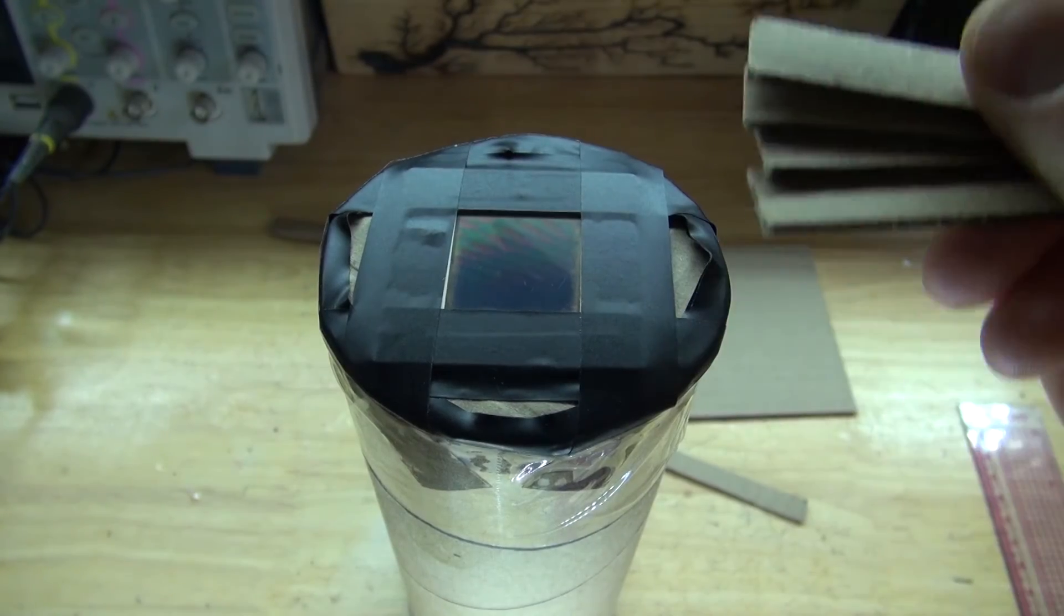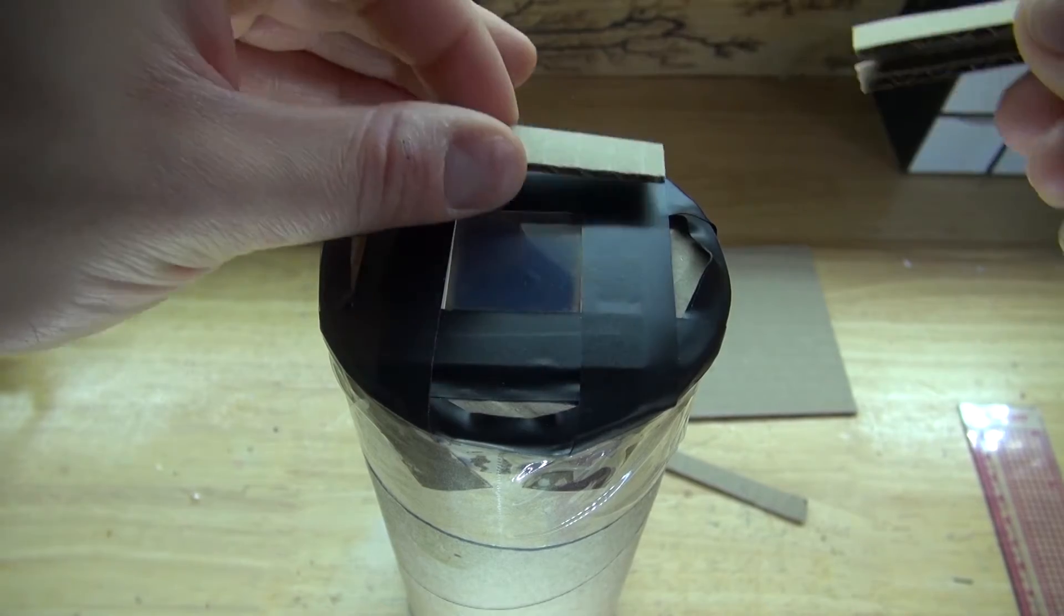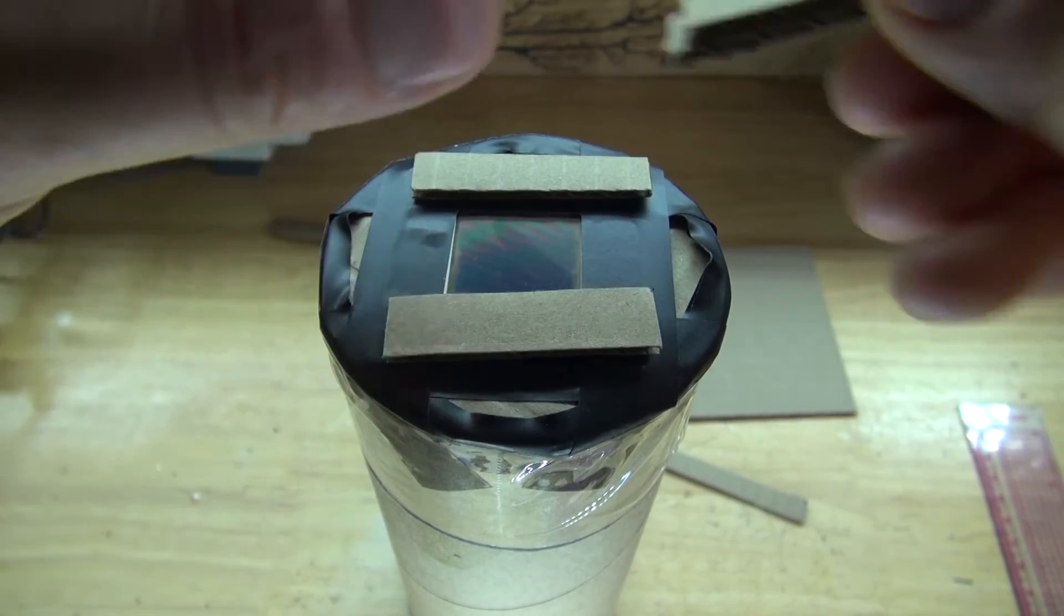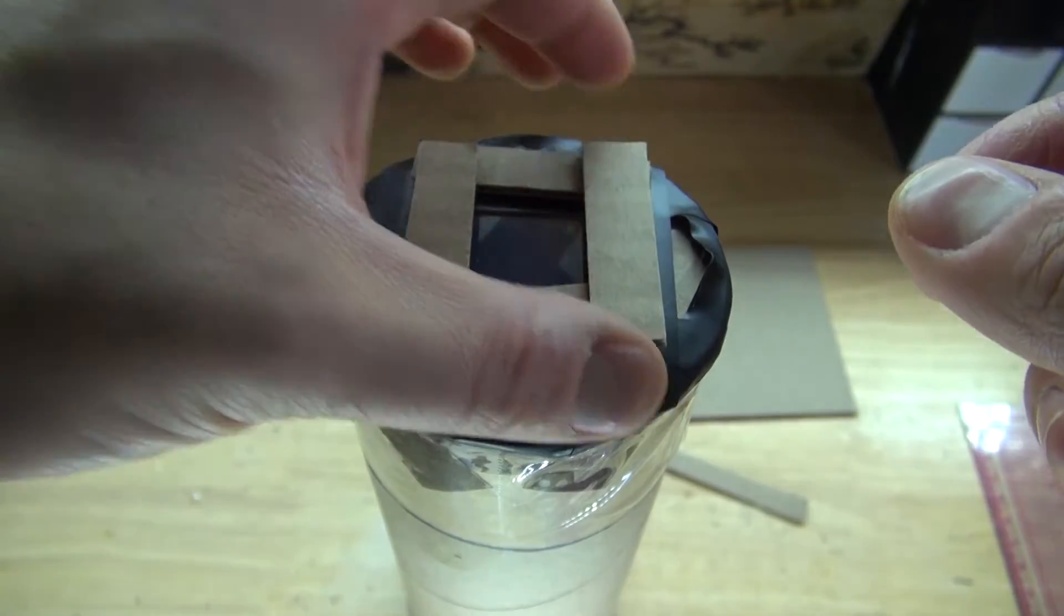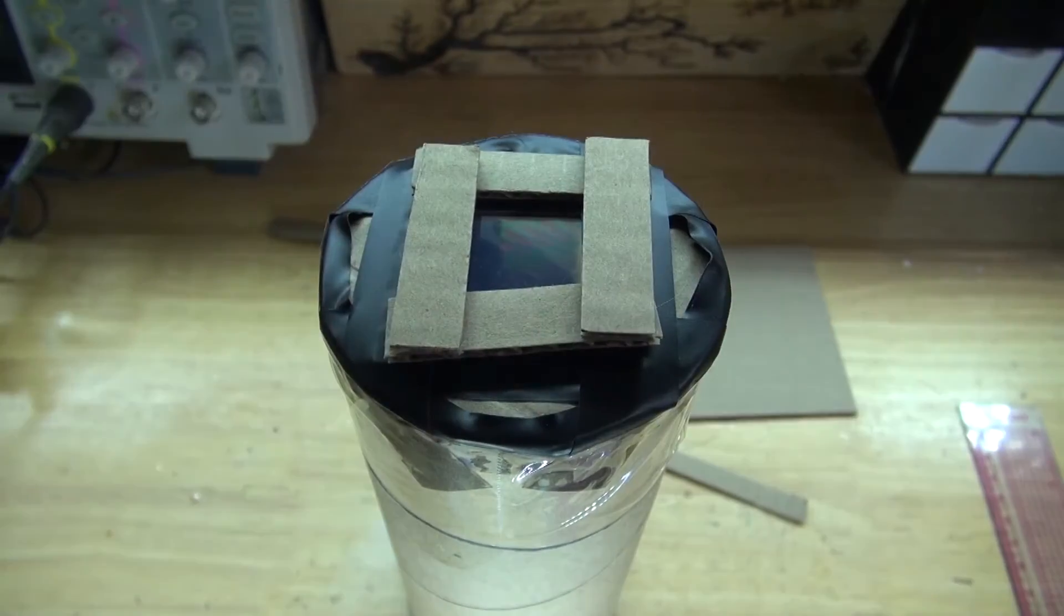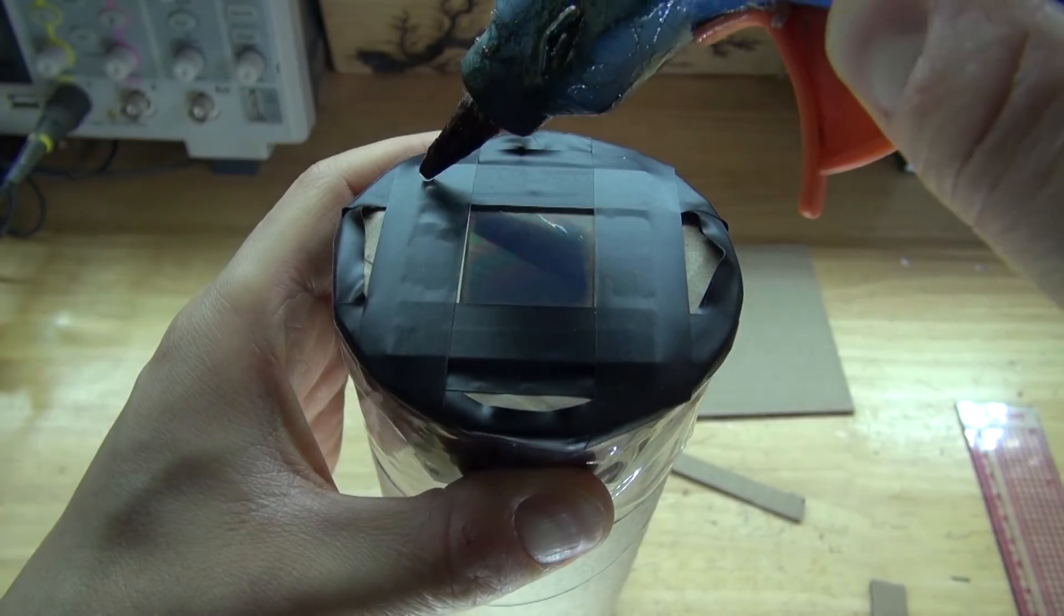Next, take some small pieces of cardboard, put one on the top and one on the bottom. And then another on each side like this. Next, take some hot glue and glue everything in position.